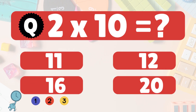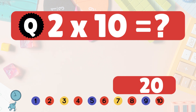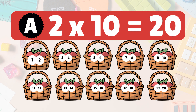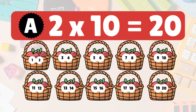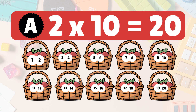Next, 2 times 10 is what? 2 times 10 is 20. Here we have 10 groups of 2 apples each. Let's count them all: 1, 2, 3, 4, 5, 6, 7, 8, 9, 10, 11, 12, 13, 14, 15, 16, 17, 18, 19, 20. So 2 times 10 is 20 apples.